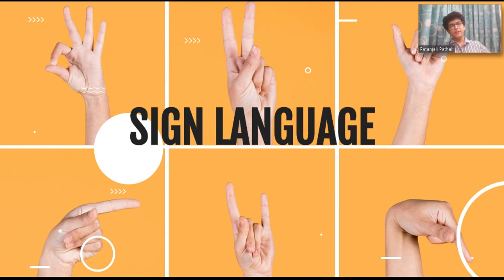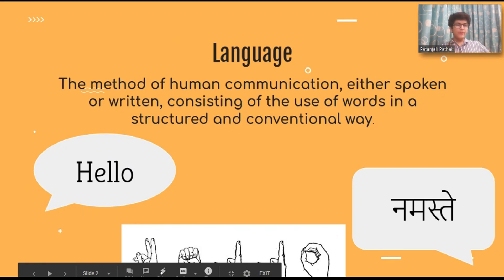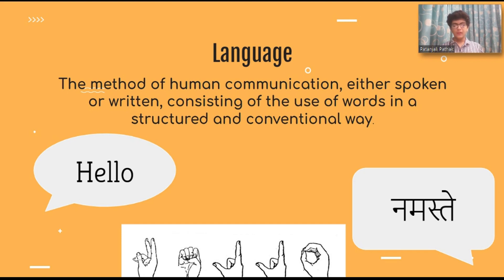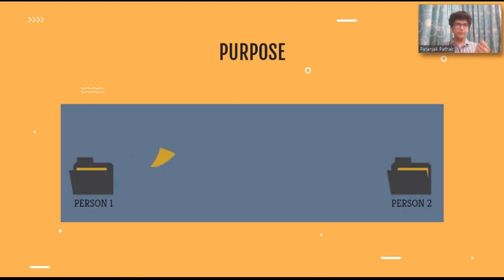But firstly, what is a language? By definition, a language is the method of human communication, either spoken or written, consisting of the use of words in a structured and conventional way. Each language has its own script, so the words which are being spoken can be put down on paper. But sign language is neither spoken nor written. Then how come is it still a language? This is because it fulfills the purpose of a language. The purpose of any language is to communicate information from one person to another.